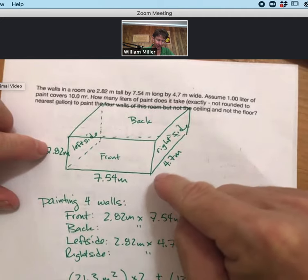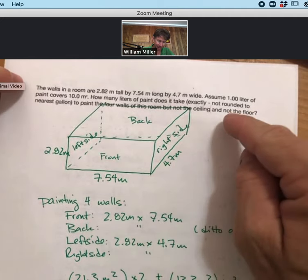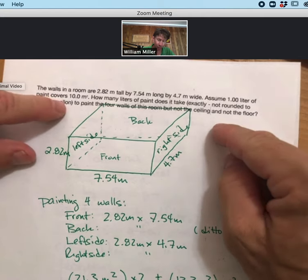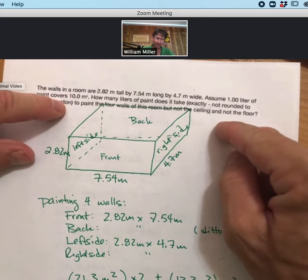So I've got my sides here. It says to paint the four walls of this room but not the ceiling and not the floor.